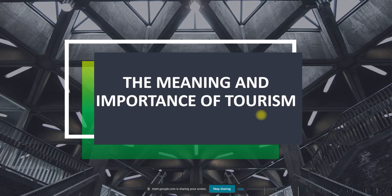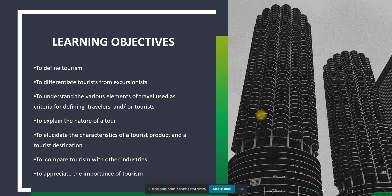Just a recap from what we discussed last meeting. I presented the learning objectives for Lesson 1: you'll be able to define tourism, differentiate tourists from excursionists, understand the various elements of travel used as criteria for defining travelers or tourists, explain the nature of a tour, elucidate the characteristics of a tourist product and tourist destination, compare tourism with other industries, and appreciate the importance of tourism.